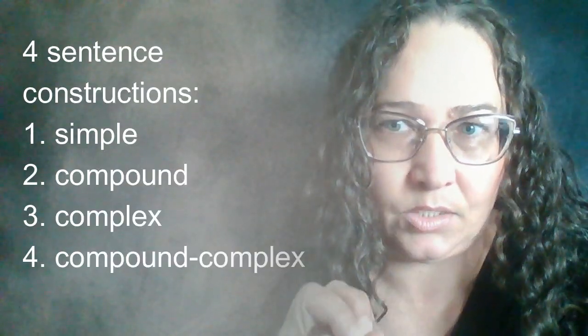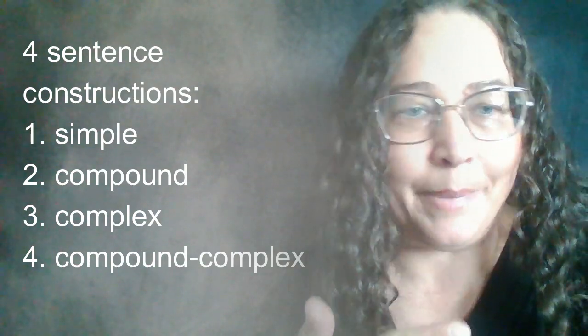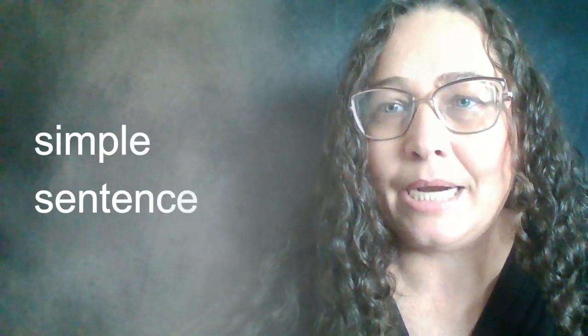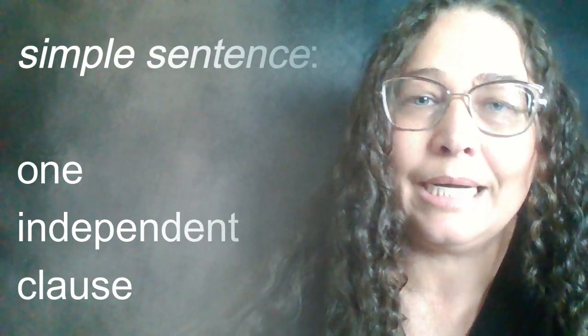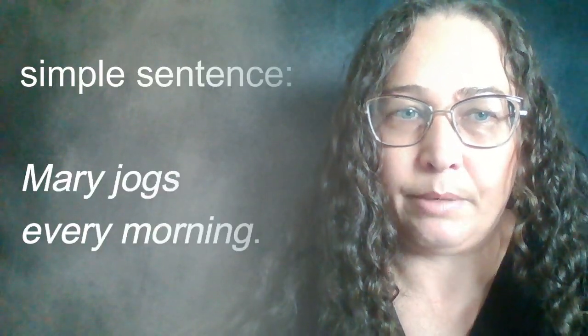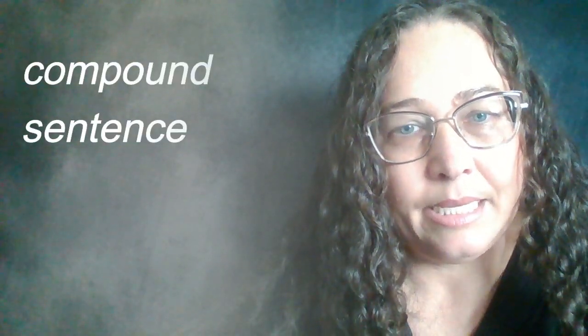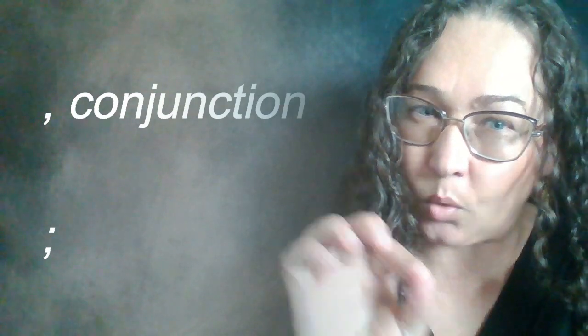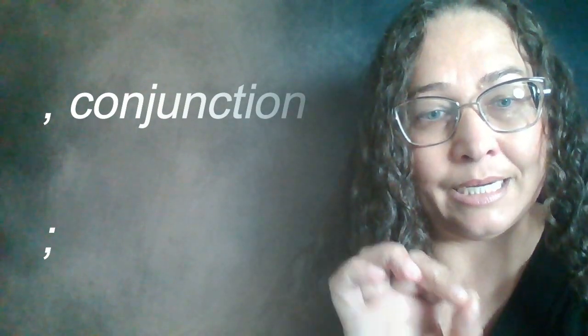Now, the way you construct a sentence controls how much information it gives. Here we identify four types of sentence constructions: simple sentences, compound sentences, complex sentences, and compound complex sentences. The simple sentence is made up of a single independent clause, or a complete subject and a complete verb. A compound sentence is made up of two independent clauses joined either by a comma and a coordinating conjunction or by a semicolon.